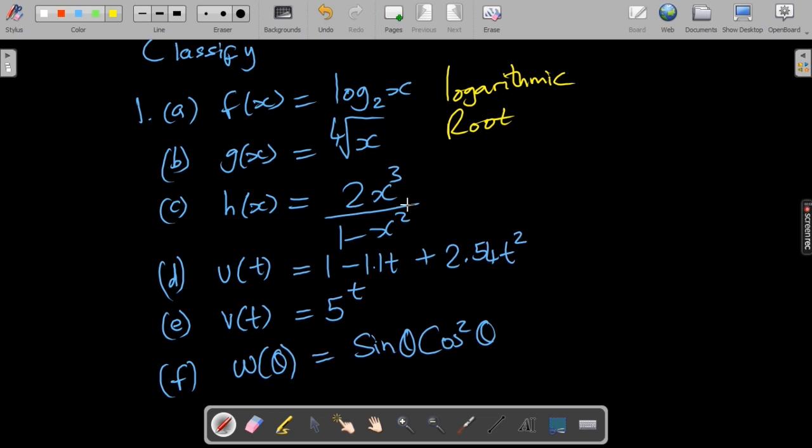The next one is written in the form a over b, or some polynomial at the top and another one at the bottom. So that is a rational function.